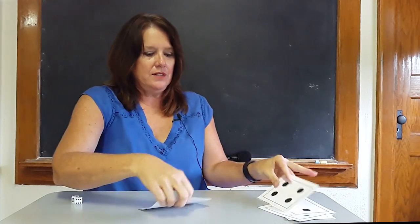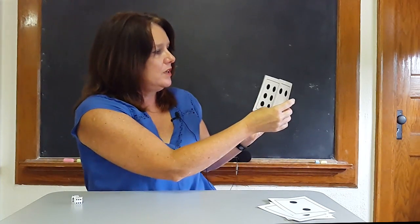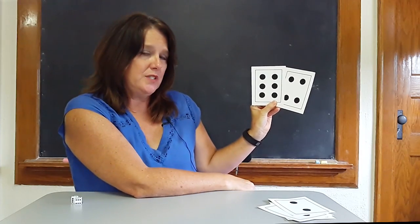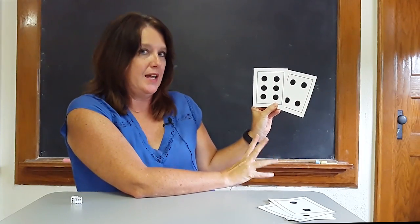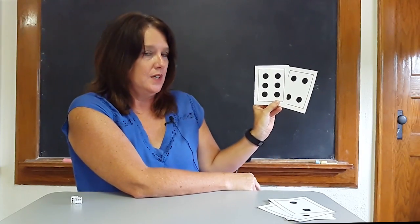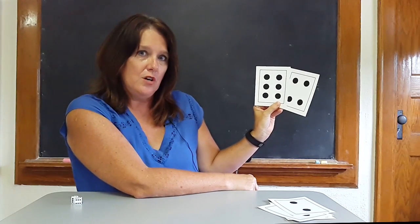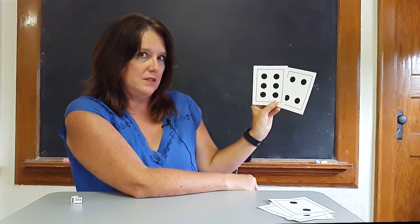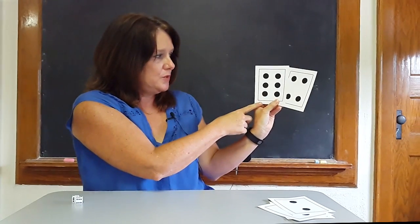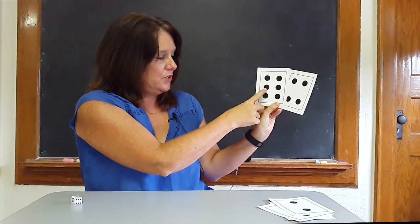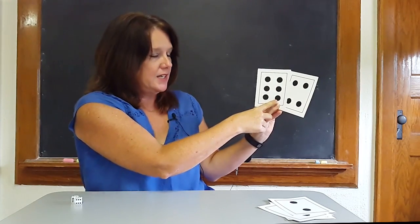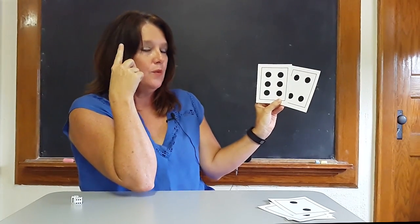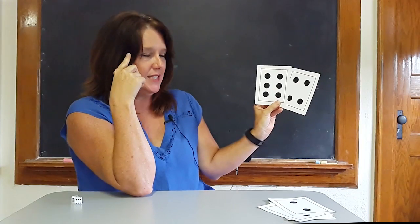Then we're going to move on to two more cards. We're going to do the same process, but this time I might have them do more of the work. Boys and girls, which card do we start with? Which card has the most dots? Hopefully they noticed this one, and then we would count it: one, two, three, four, five, six, and put that number in our head. What number is in our head? Six.